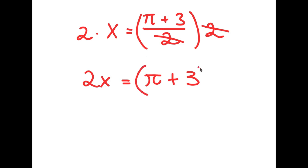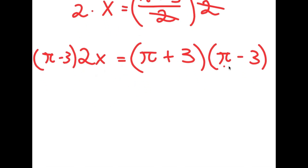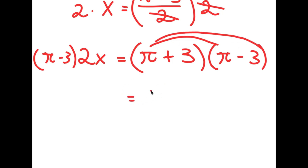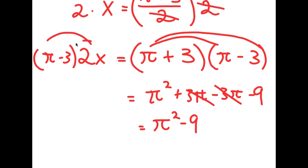From here, I'm going to multiply both sides by (pi minus 3). So I have (pi minus 3) times 2x is equal to (pi plus 3) times (pi minus 3). Now for (pi plus 3)(pi minus 3), I distribute: I get pi squared plus 3pi minus 3pi — those cancel out — minus 9 at the end. So this is pi squared minus 9. And for my left-hand side, distributing the 2x gives me 2x·pi minus 6x.